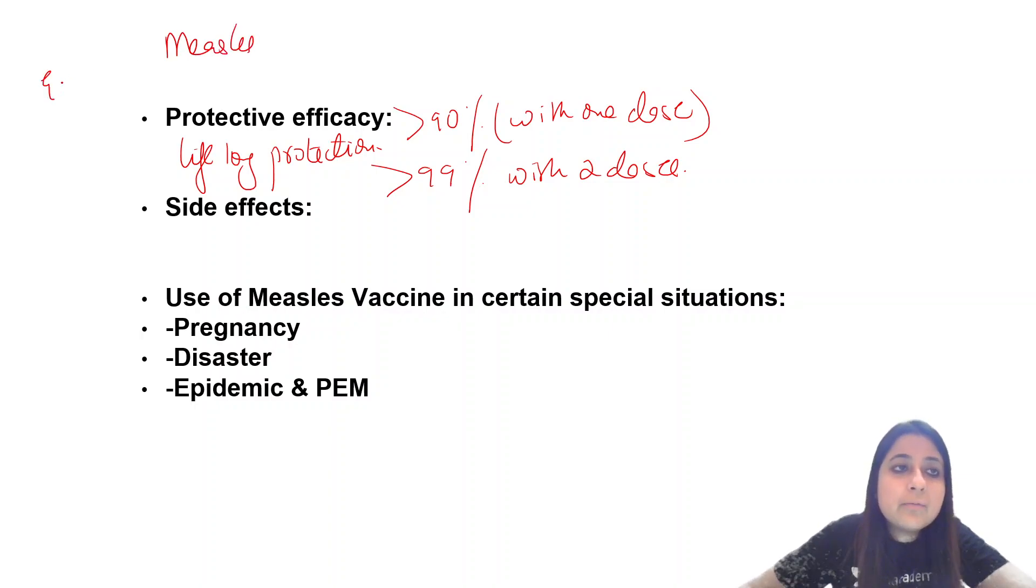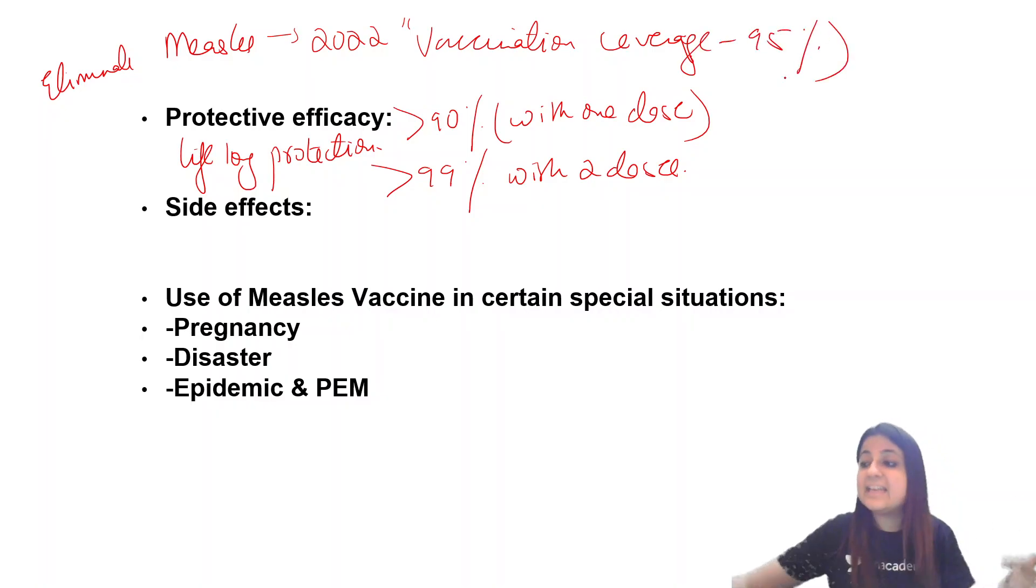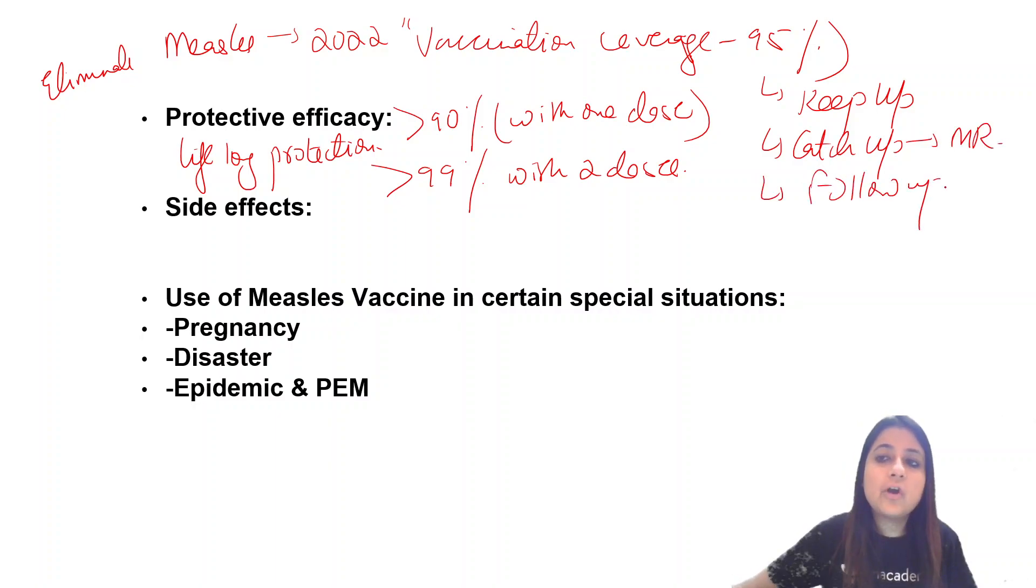In India, we're targeting to eliminate measles by 2022. We're trying to achieve 95% measles vaccination coverage. For that, we're doing keep-up vaccination (routine vaccination), catch-up vaccination campaign (Measles-Rubella immunization campaign), and follow-up. So catch-up, keep-up, and follow-up are for measles elimination.